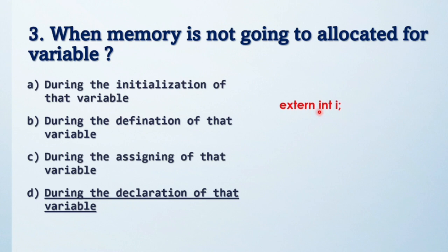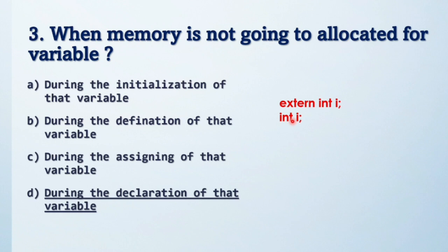For example, if you write 'extern int i' in your C code, then it means no memory is allocated for the variable i — it is just a declaration. But if you write 'int i', then memory is allocated. In depth in C, this is called a definition. So 'int i' is a definition and definition always allocates memory.